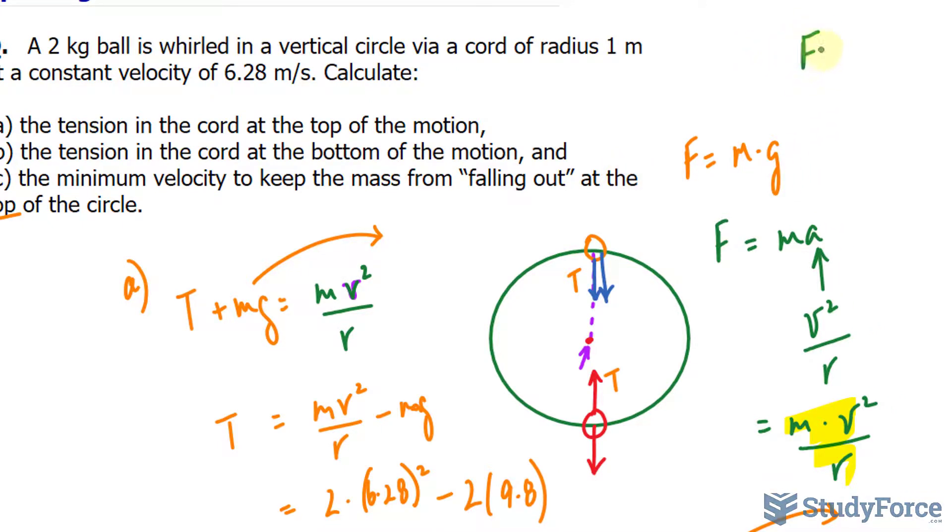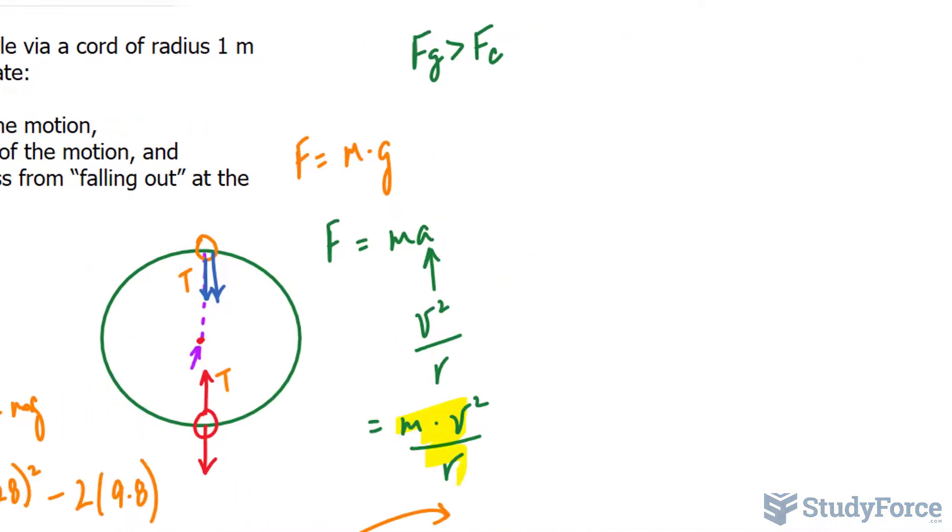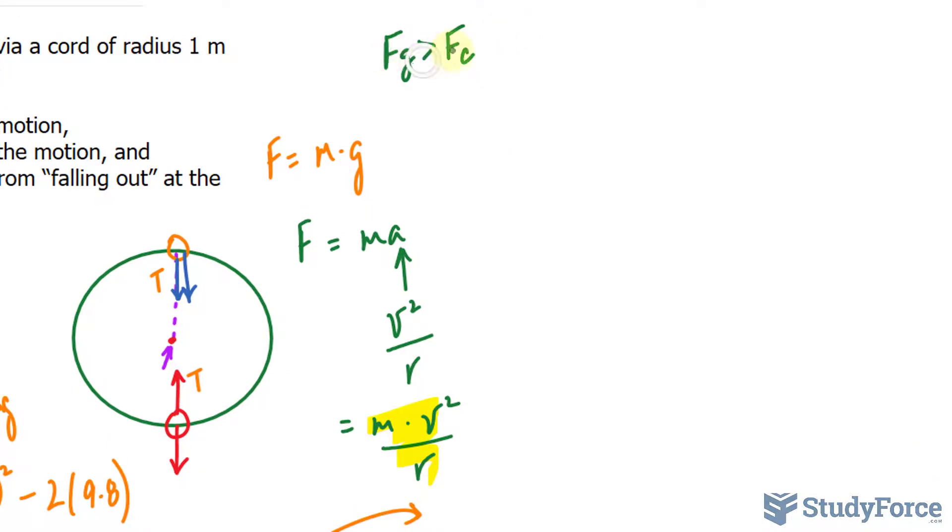So if the force due to gravity is greater than the centripetal force, which I'll represent as FC, then it would fall out of the loop. So with that being said, let's set the two forces equal to one another, where I have mg, the force due to gravity, and the centripetal force equal to each other, and solve for v.